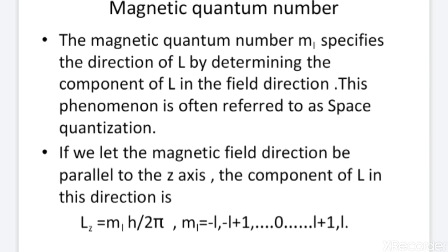The next quantum number is the magnetic quantum number. It specifies the direction of L by determining the component of L in the field direction — this is often referred to as space quantization. If we let the magnetic field direction be parallel to the z direction, the component of L in the z direction is Lz equals ml times h upon 2π. The value of ml varies from minus l to plus l, including 0.